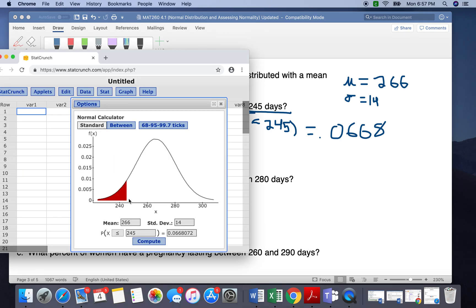So again, we're going to go into StatCrunch. And the only thing we'll have to change is the part down here, because our mean is the same, standard deviation is the same. So we'll change it to greater than, because it's more. And we want 280.